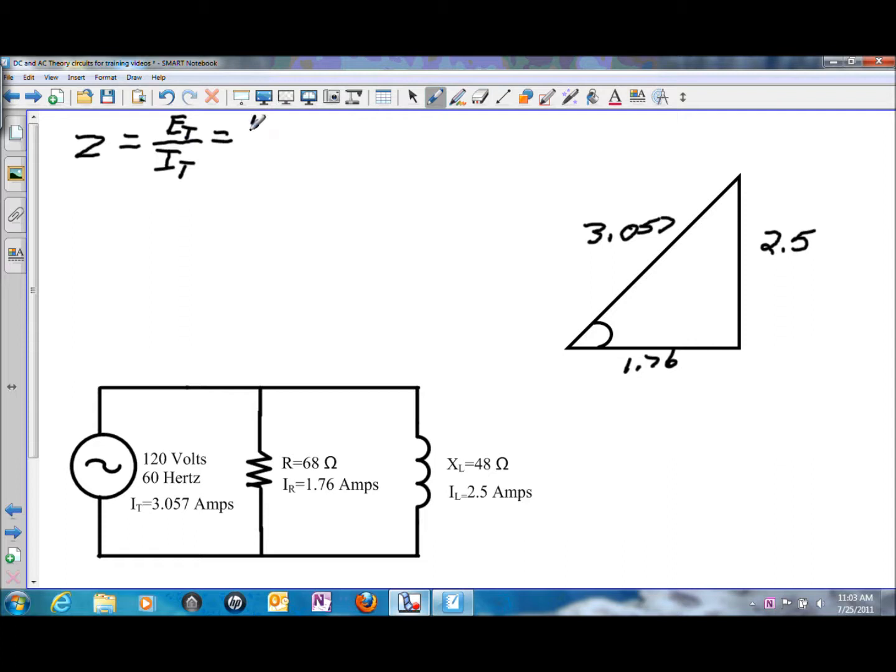And in this circuit the way it's designed, that would be 120 volts from the source divided by 3.057 amps of total current. That will give us an impedance of 39.25 ohms.